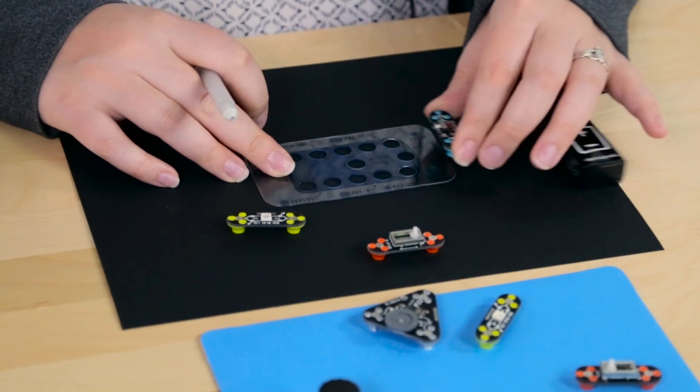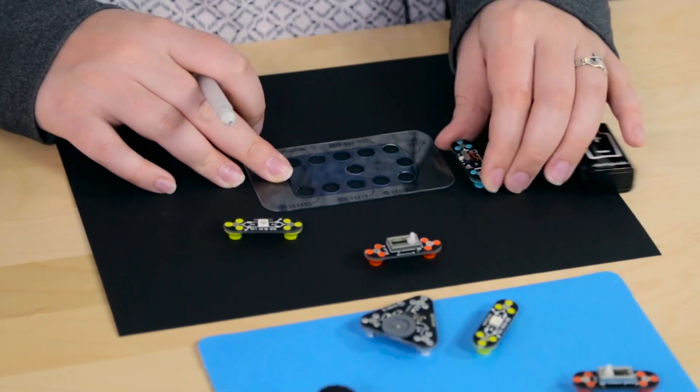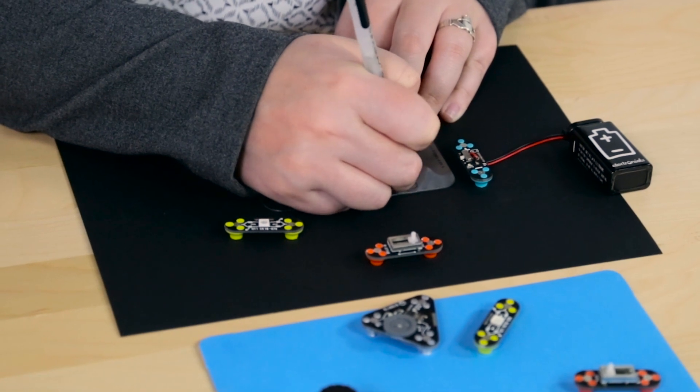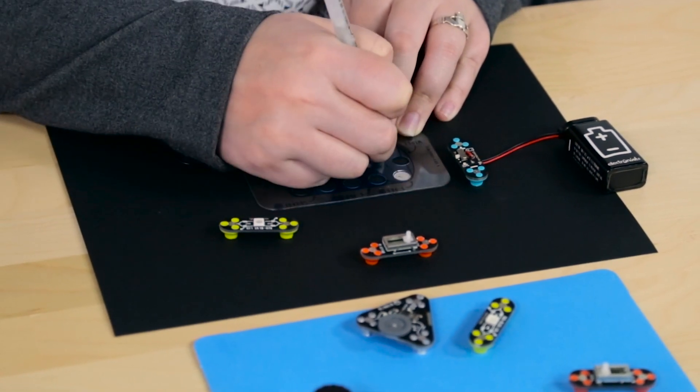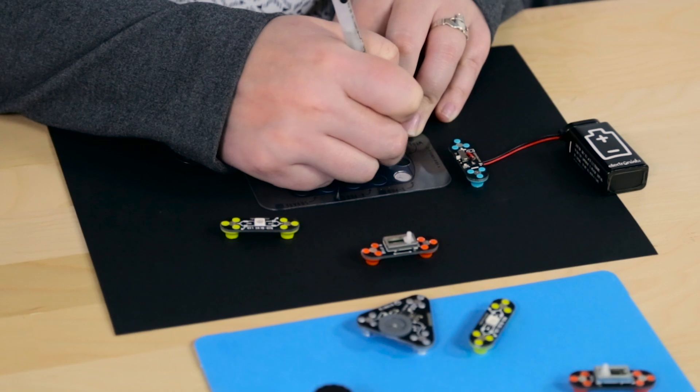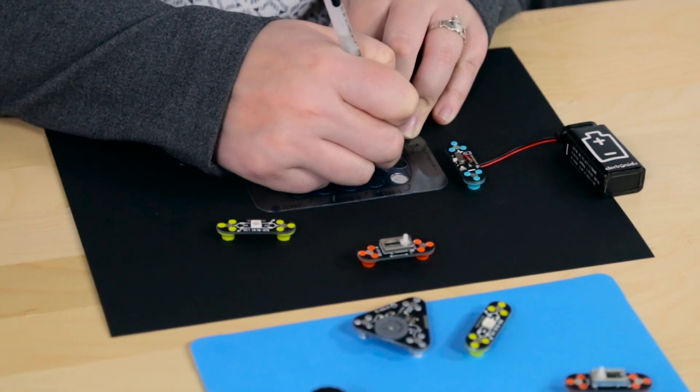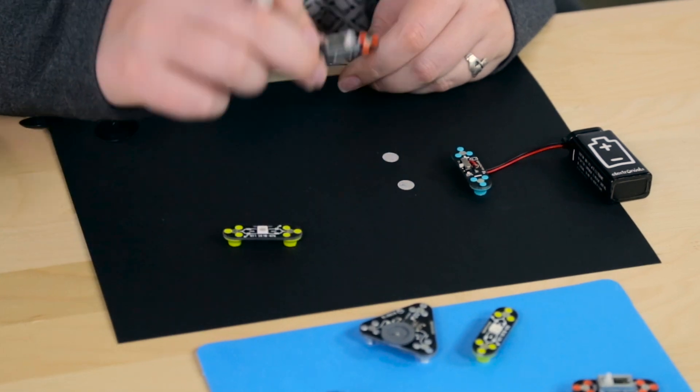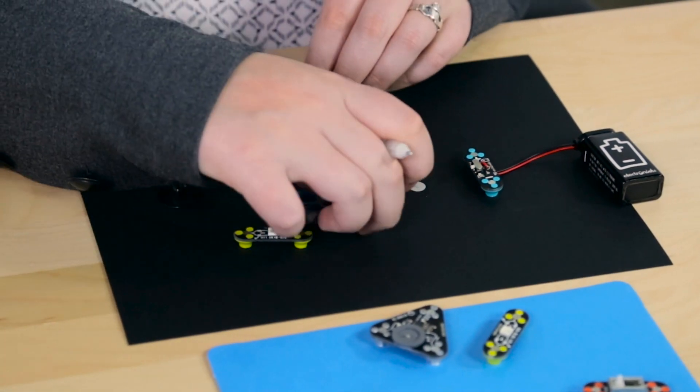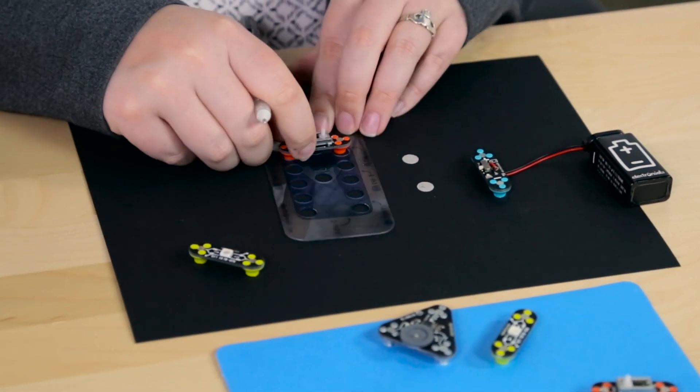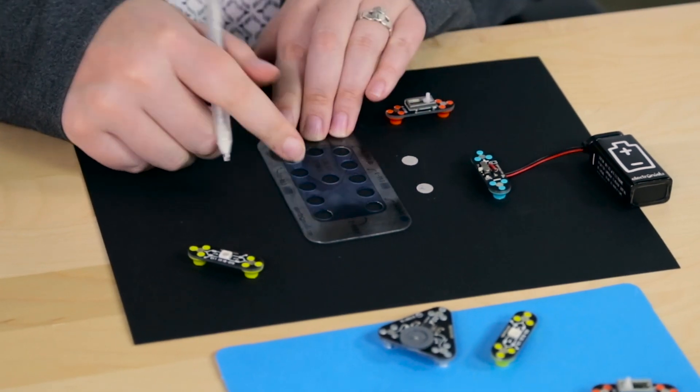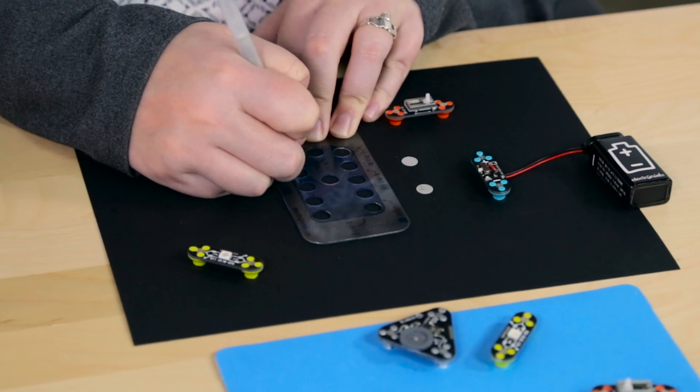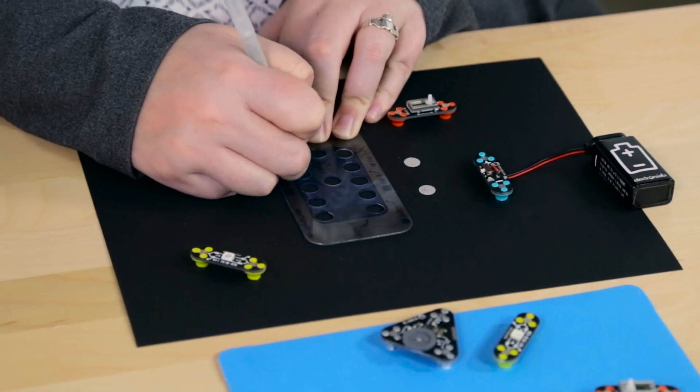We'll start by drawing all the pads. So we're gonna need some pads for the battery module. Use our stencil, fill them in all the way. We're gonna need some pads for our slider module. I'm gonna put him up here, just like that. Color that guy in all the way.